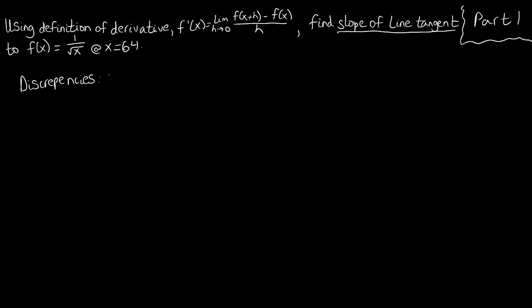First we're going to check for vertical asymptotes. We know those happen when the denominator equals 0. So let's solve for x to see what makes our denominator 0. We square both sides and get that x equals 0, so there's a vertical asymptote at x equals 0. Will that pose a problem for us? Not really, because the x we're evaluating our derivative at is 64, which doesn't equal 0, so we're good.